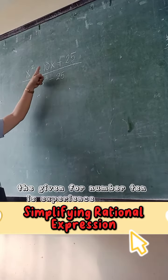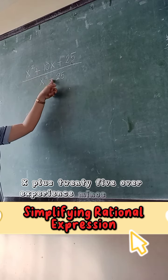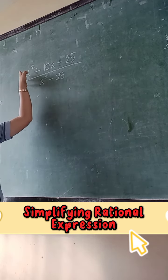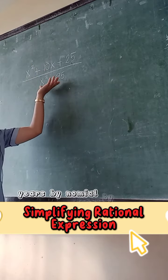The given for number 10 is x squared plus 10x plus 25 over x squared minus 25. So our numerator has how many terms? Trinomial. Okay, three terms, which is trinomial. And our denominator is? Binomial.